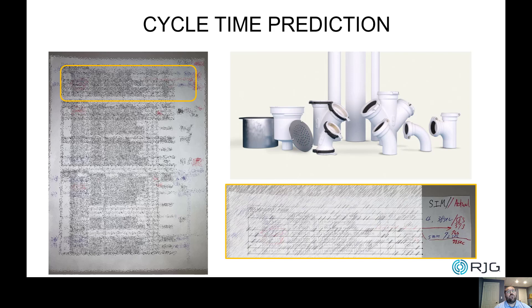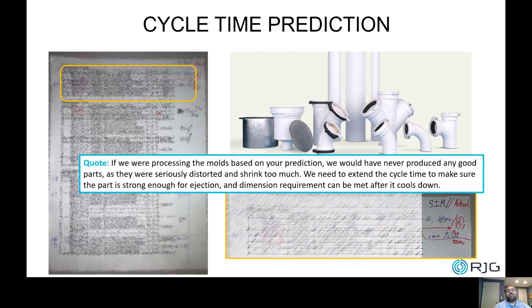Everything went smoothly in the design and engineering phase. However, at the tool tryout, we received the feedback that our forecasted cycle times were drastically shorter than what was required by 30 to 50%. As you can see in the handwriting, the difference between the predicted and the actual. The customer stated that if we were processing the molds based on your prediction, we would have never produced any good parts, as they were seriously distorted and shrink too much. We needed to extend the cycle time to make sure the part is strong enough for ejection, and the dimension requirement can be met after it cools down.